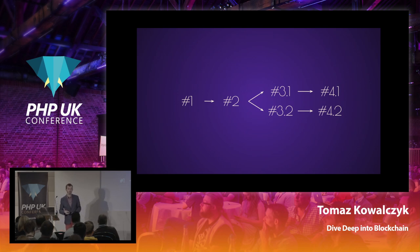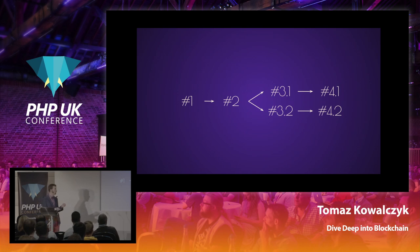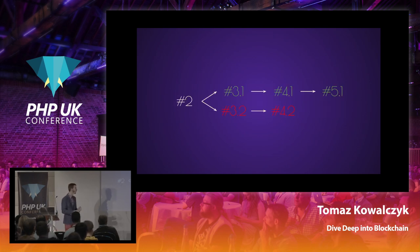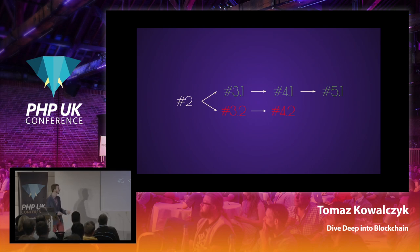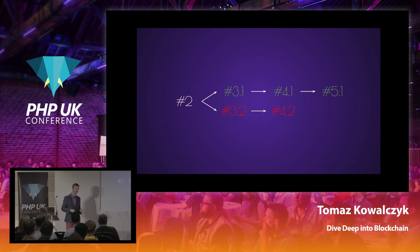In the case of Bitcoin, the simplest algorithm that resolves this problem is: the longest chain always wins. Say another block is generated based on one chain and distributed to all nodes. All the half of the network that had blocks 3.2 and 4.2 gets retroactively discarded back to the state based on block 2, and blocks 3.1, 4.1, and 5.1 become the only future that exists.